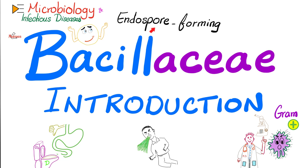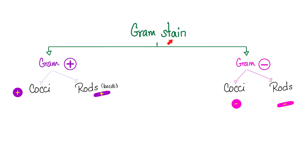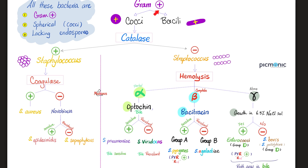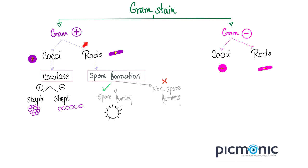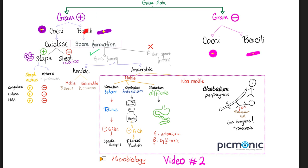If you want to know what an endospore is, watch the previous video, and please watch these videos in order. As you know, bacteria by gram-stain could be gram-positive or gram-negative. We're talking about gram-positive rods today. Today, we are talking about gram-positive rods that are spore-forming. We will cover them in many videos, and then later we'll talk about the non-spore-forming gram-positive rods.